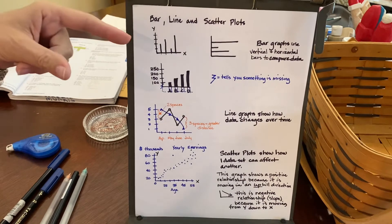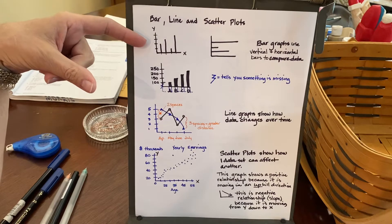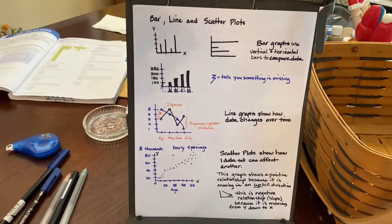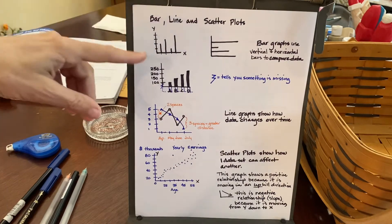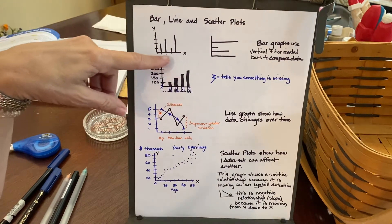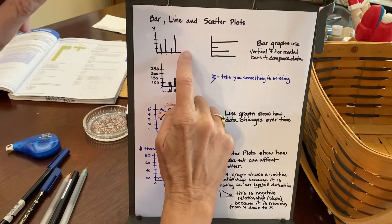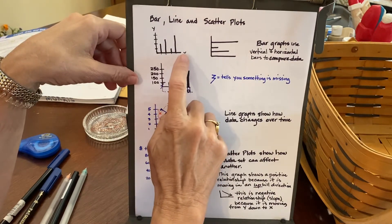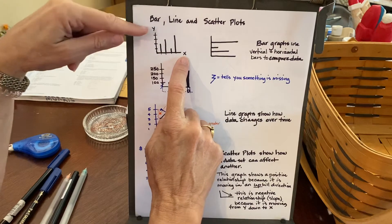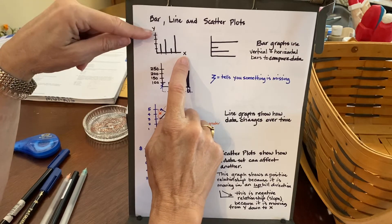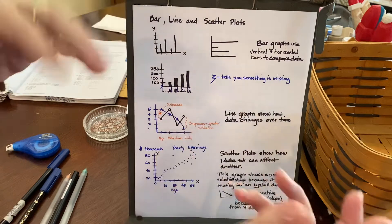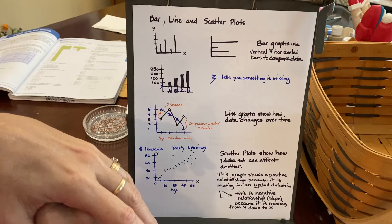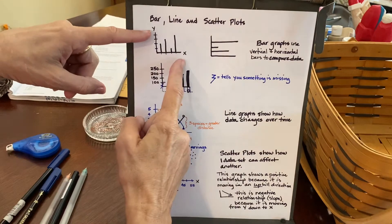So, bar graphs can either be vertical or horizontal, and they compare data. You can see, depending on what I would tell you these are, and notice that the bottom, the horizontal part of the graph, is known as the x-coordinate, and the vertical is known as the y. Keep that in mind, because later we're going to get into coordinate grids and functions, and all of this will stay the same.